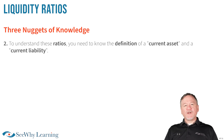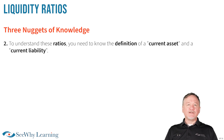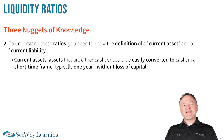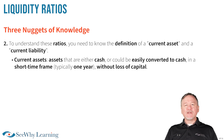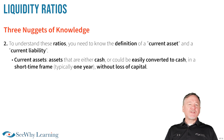Nugget number two: to understand these ratios, you obviously need to know the definition of a current asset and a current liability. Current assets are defined as assets that are either cash or could be easily converted to cash in a fairly short time frame — typically one year — without a loss of capital. Examples may include cash and cash equivalents, accounts receivable, and even inventory.